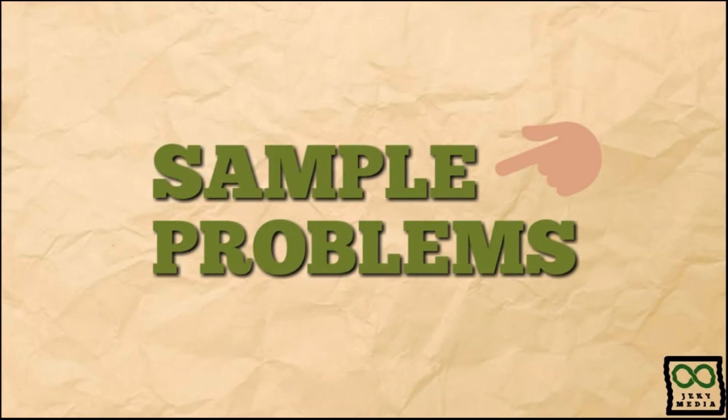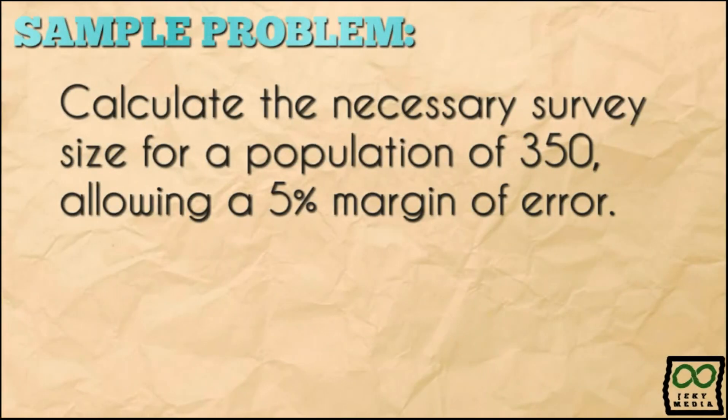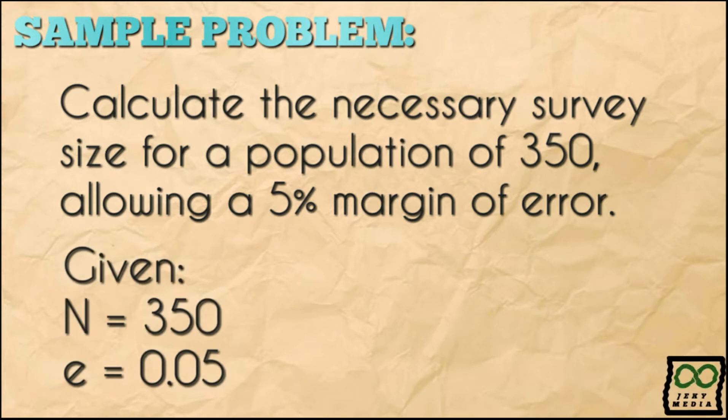Now, let's go to sample problems. Calculate the necessary survey size for a population of 350, allowing a 5% margin of error. In this problem, the given population size is 350, and the margin of error is 5%. Converting 5% to decimal form will give you 0.05.